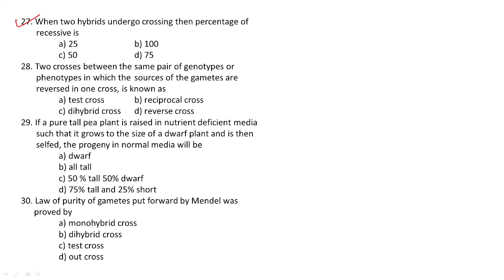When two hybrids undergo crossing, what is the percentage of recessive individuals? For example, capital T and small t is a hybrid, and if it undergoes crossing with another hybrid capital T and small t, what will be the percentage of recessive traits — the percentage of recessive individuals?